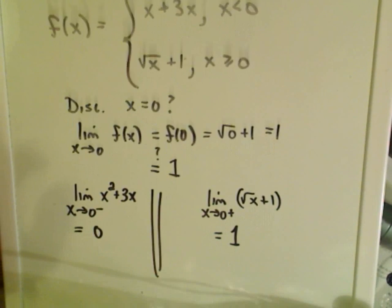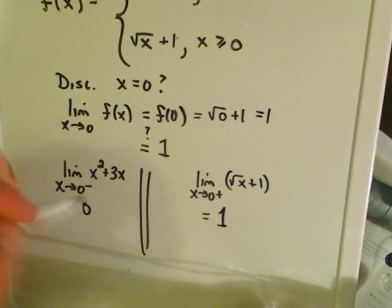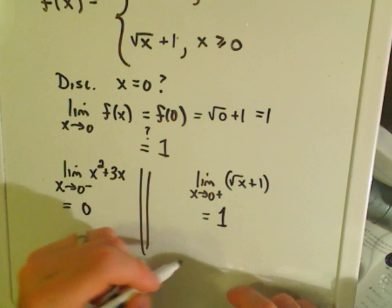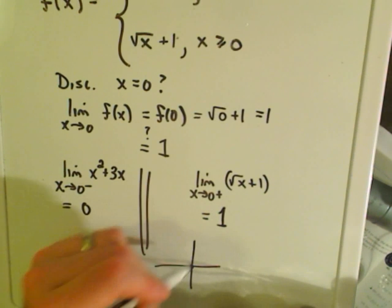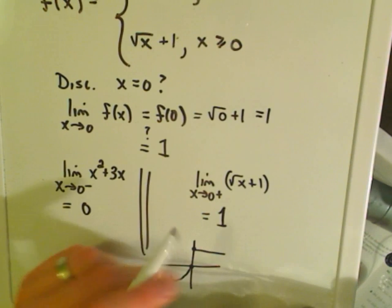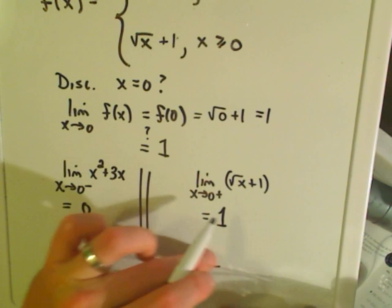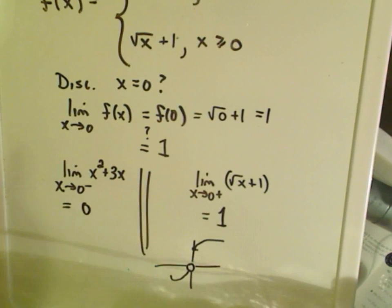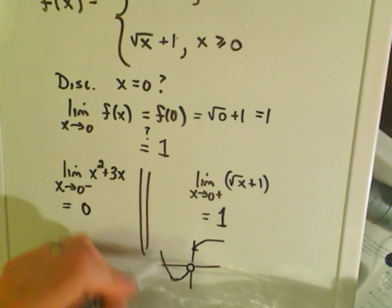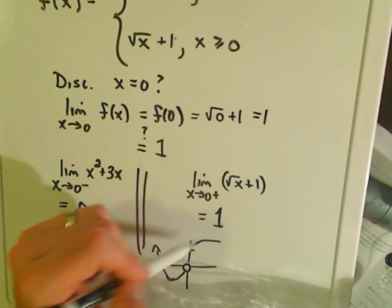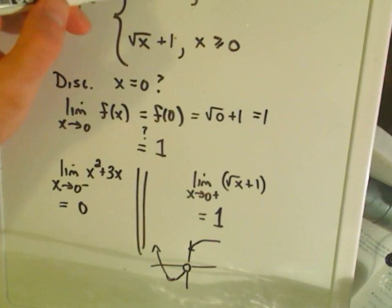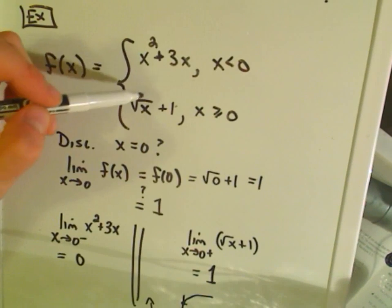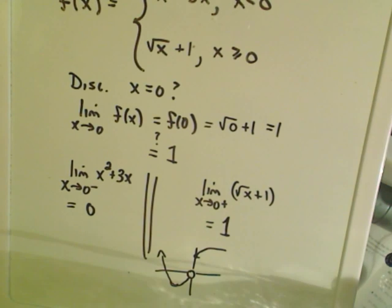The limit doesn't even exist — on one side it's going to 0, and on the other side it's going to 1. The left piece is a parabola approaching 0, and the square root function is up at 1. There's just a jump discontinuity in the graph at this point. You can graph x squared plus 3x and square root of x plus 1 and check that this happens.